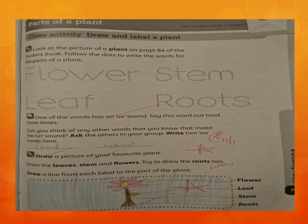You have to follow the dots and then you can make the word. First is flower, then stem — S-T-E-M — then leaf — L-E-A-F — and the fourth is roots — R-O-O-T-S. Join the dots for each word.